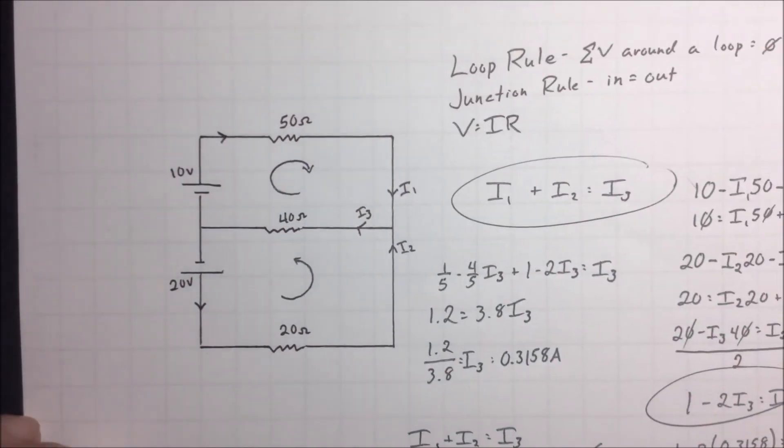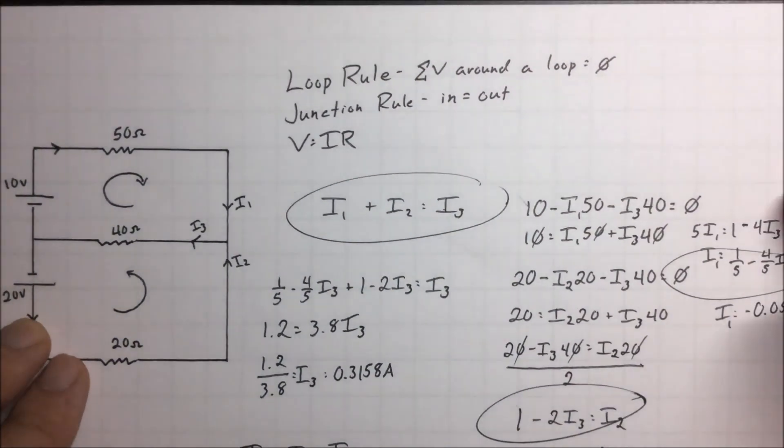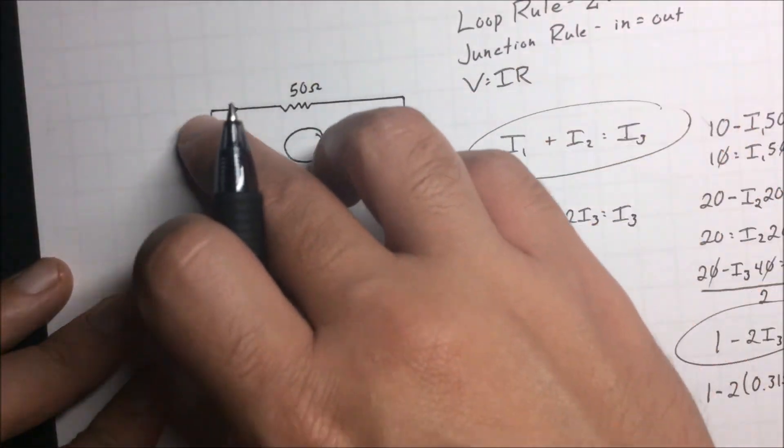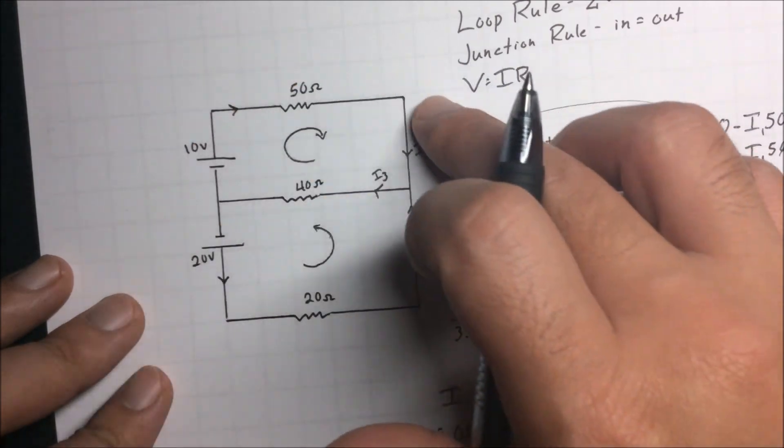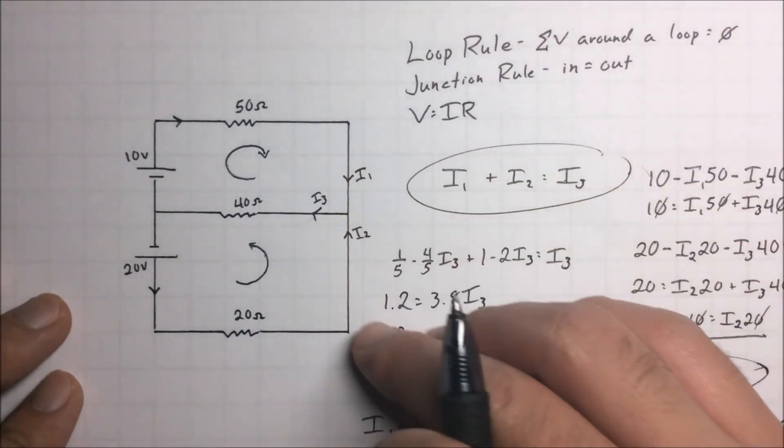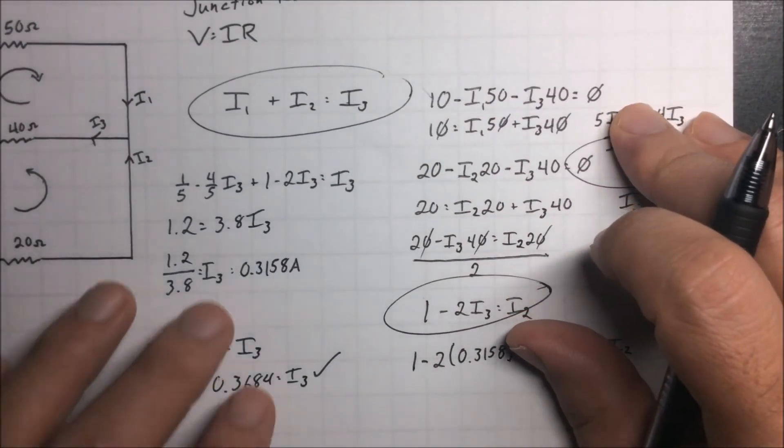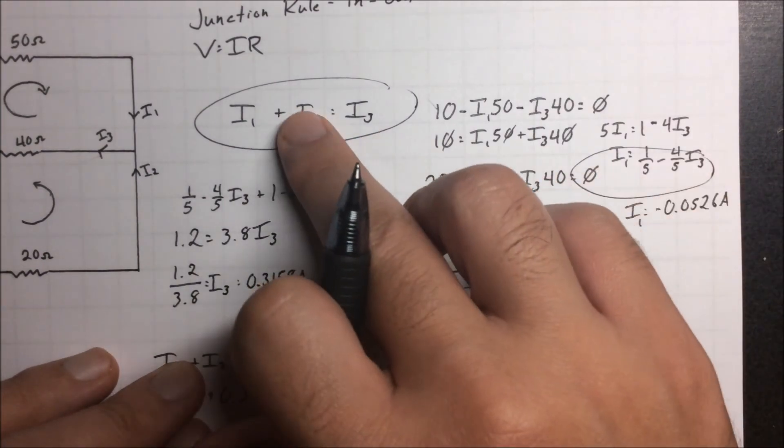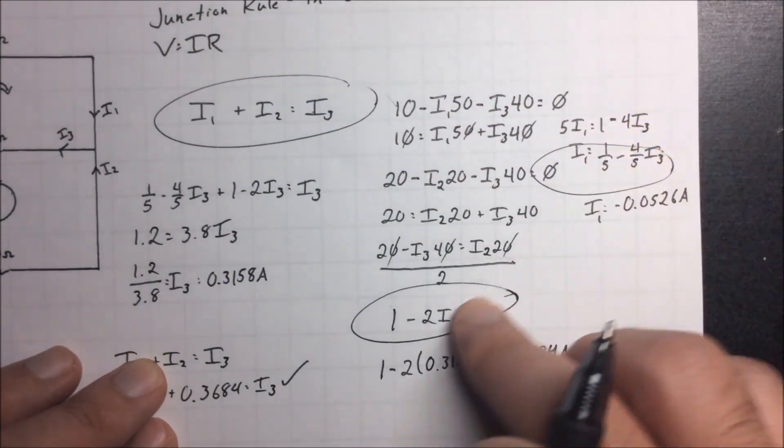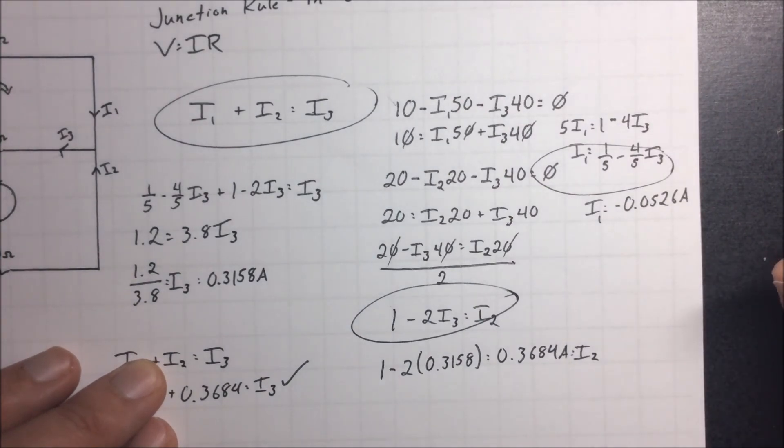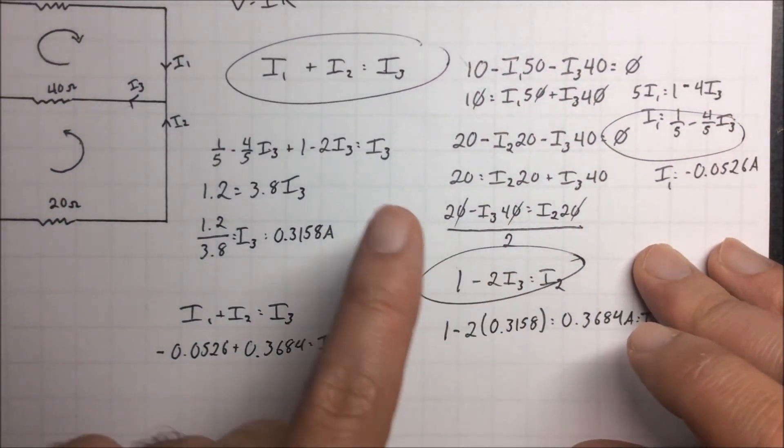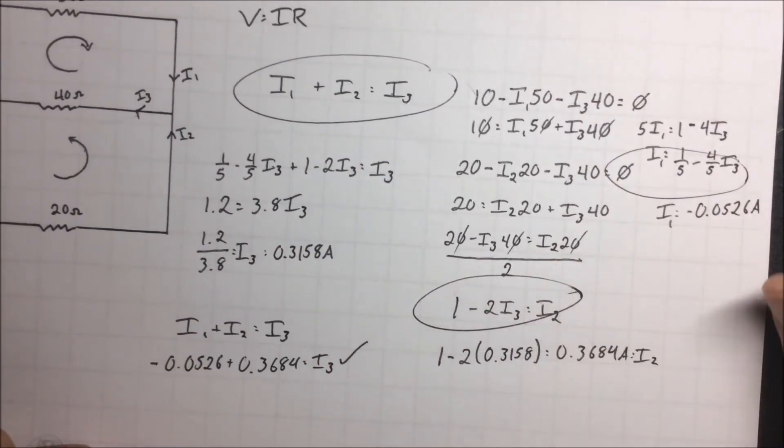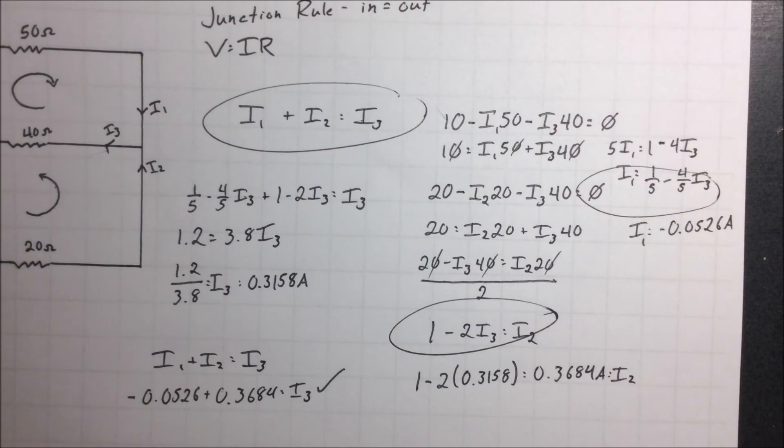Here we are, loop rule, junction rule. Loop rule is that around a whole loop, the voltage, the potential difference should be equal to 0 once you go through the loop. Junction rule says stuff goes in, equal stuff goes out. That will help you make some original equations, unique equations for our unknowns. We had this equation here from junction rule, these two from loop rule, combining all of them together using substitution, you could use elimination, whatever, matrix, you can do that too and that's always fun. And you get to your answers for at least one of them and if you find one current then you can find the other two pretty easily. So that will be the end of this video, here you go.